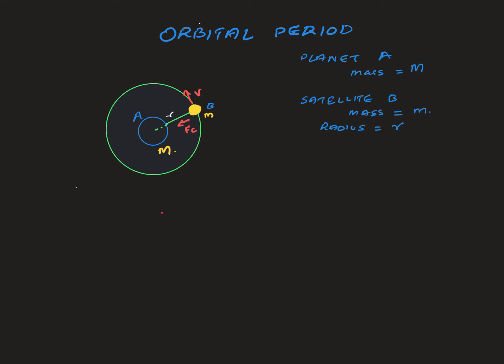Writing equations for both forces: the gravitational force equals GMm over r squared, and the centripetal force equals mv squared over r. These are equal because the centripetal force is provided by the gravitational force. So mv² / r = GMm / r², and from this we can find that v equals the square root of GM over r - the orbital velocity equation derived in a previous video.